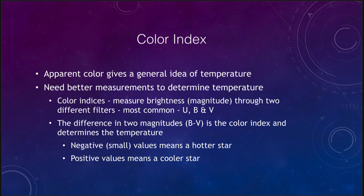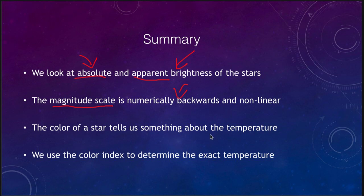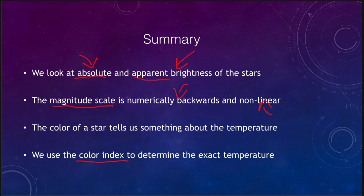To summarize: we looked at two different measures of brightness — absolute and apparent. Apparent brightness is what we see from Earth; luminosity is what the star is really putting out. The magnitude scale astronomers use has two confusions: it is numerically backwards, and it is not linear. The color of a star tells us something about its temperature — a bluer star is hotter, a redder star is cooler — but we need to use the color index to determine the exact temperature and make more detailed measurements. That concludes our lecture on the brightness and colors of stars.